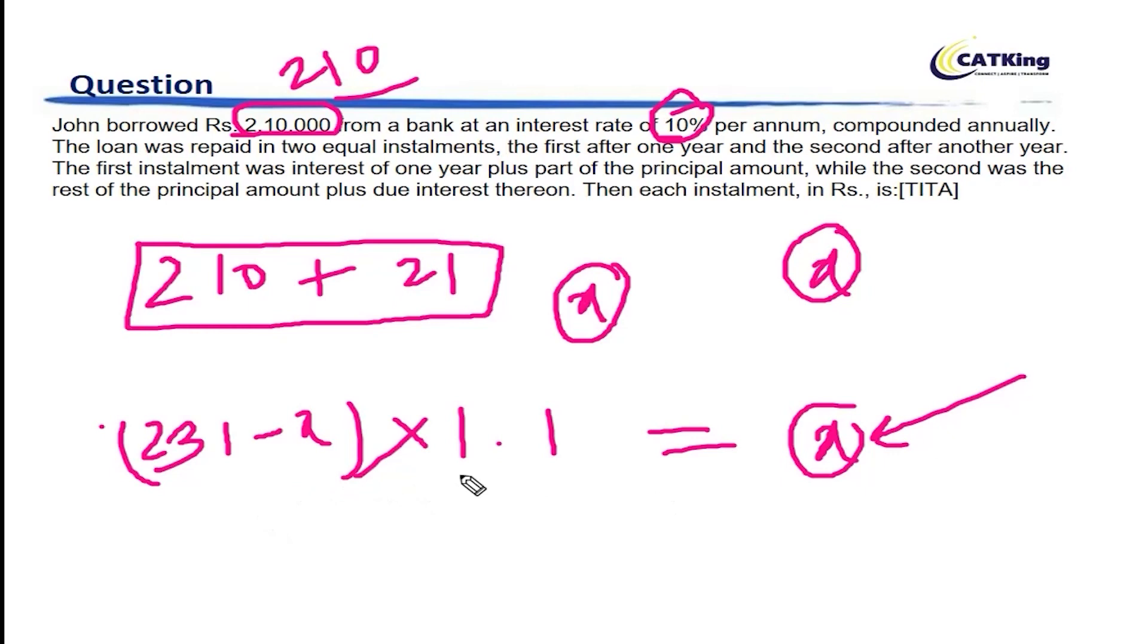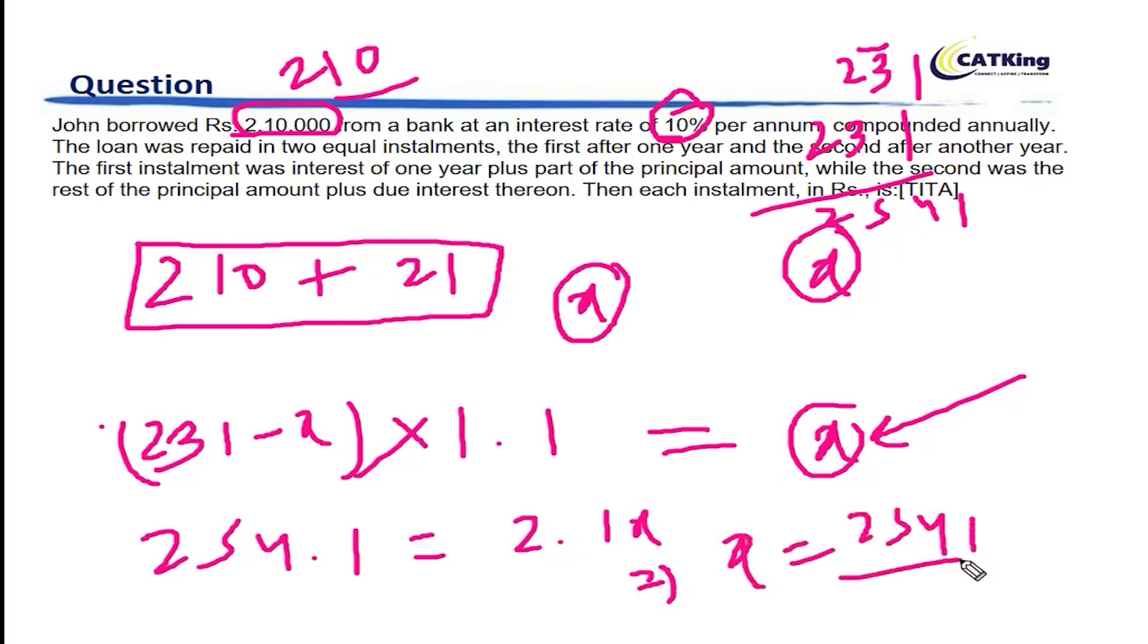Now, if you just solve this, you can clearly see 231 into 1.1 becomes 231 and 231. So, it becomes 254.1. Therefore, 254.1 is equal to 2.1X. Therefore, X becomes 254.1 divided by 21.